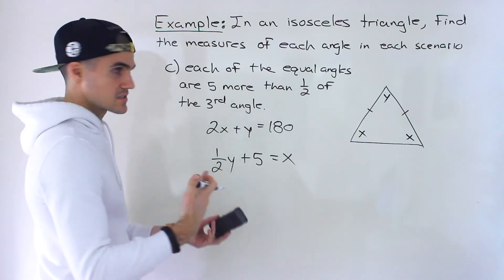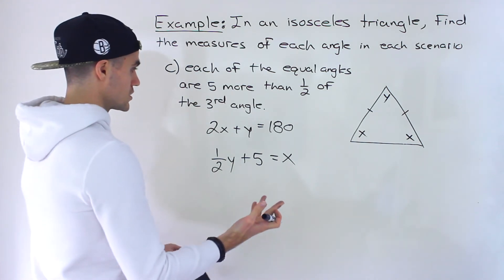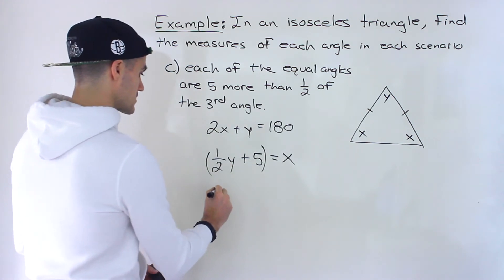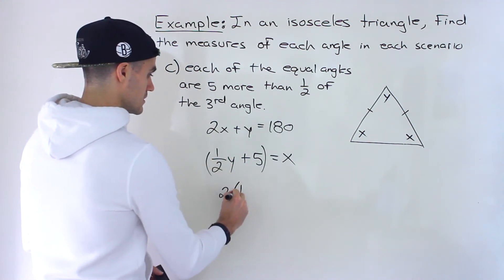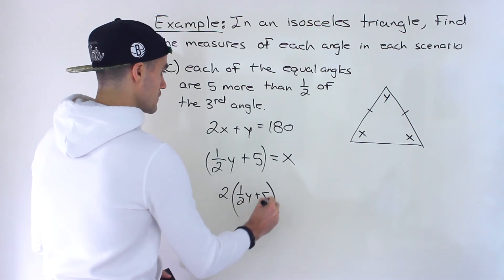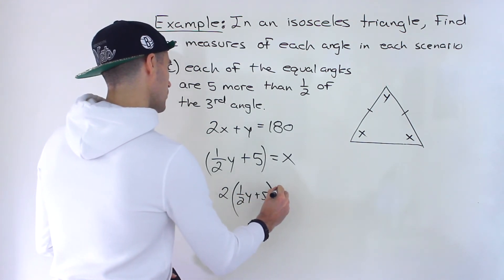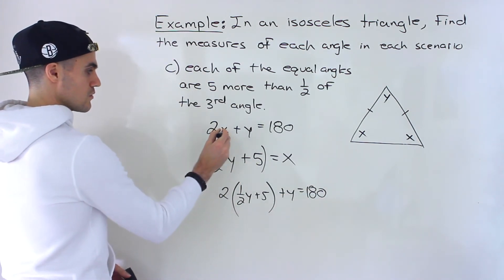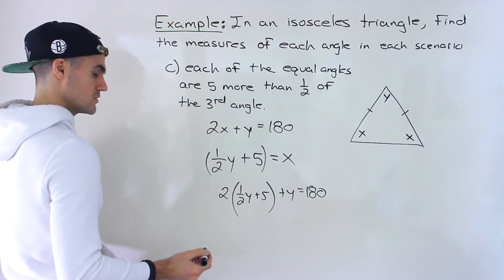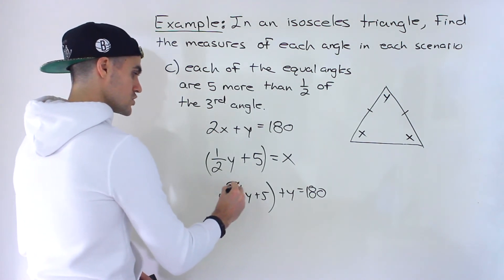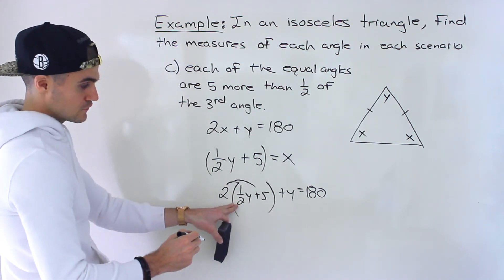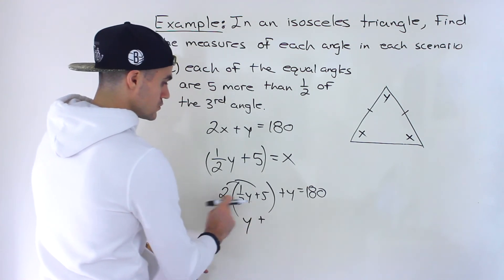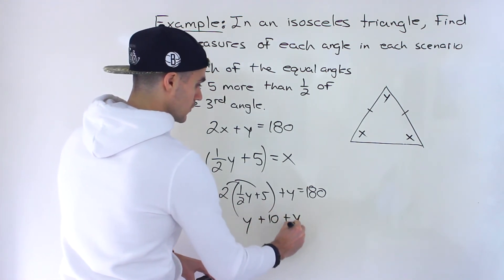Since x is already isolated, I'll plug x equals one half y plus 5 into the first equation: 2 times (one half y plus 5) plus y equals 180. Distributing the 2: two times one half gives y, and two times five gives 10. So we get y plus 10 plus y equals 180.